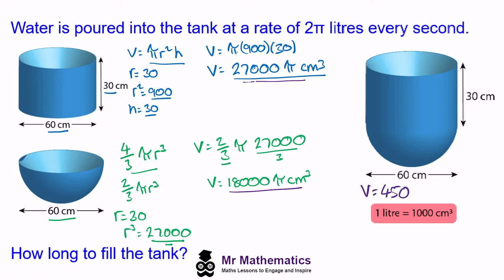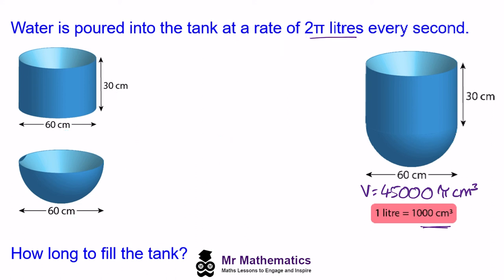So now we're going to look at converting 2π liters into centimeters cubed. We've been told that one liter is 1,000 cm³ so two liters will be 2,000 cm³. So 2π liters will be 2,000π cm³ and this is being poured in every second.